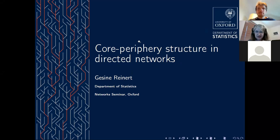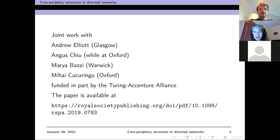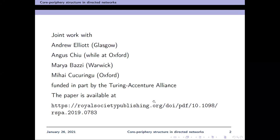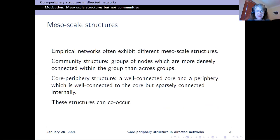I'd like to talk about core-periphery structures in directed networks. This is work done with Andrew Elliott, Angus Chu (while he was an MSc project student at Oxford), Maria Bazzi, and Mihai. It was funded in part by the Turing Accenture Alliance. We have a published paper, but we are starting to look at this project again from slightly different angles.